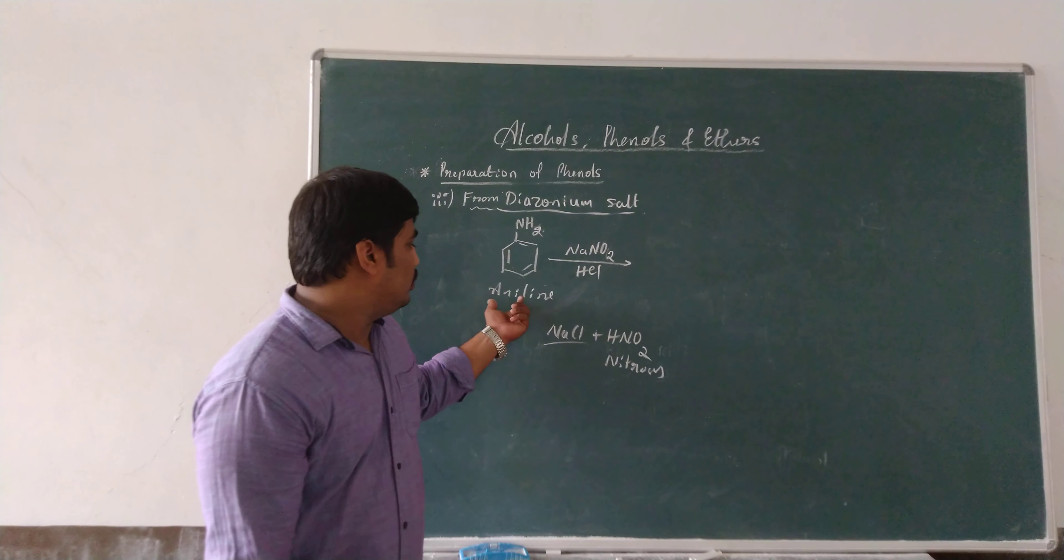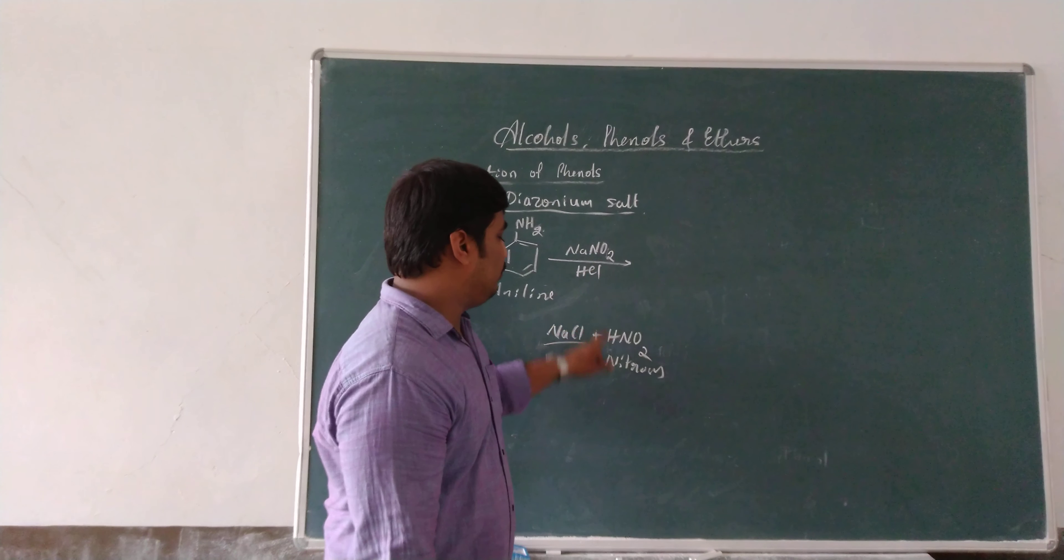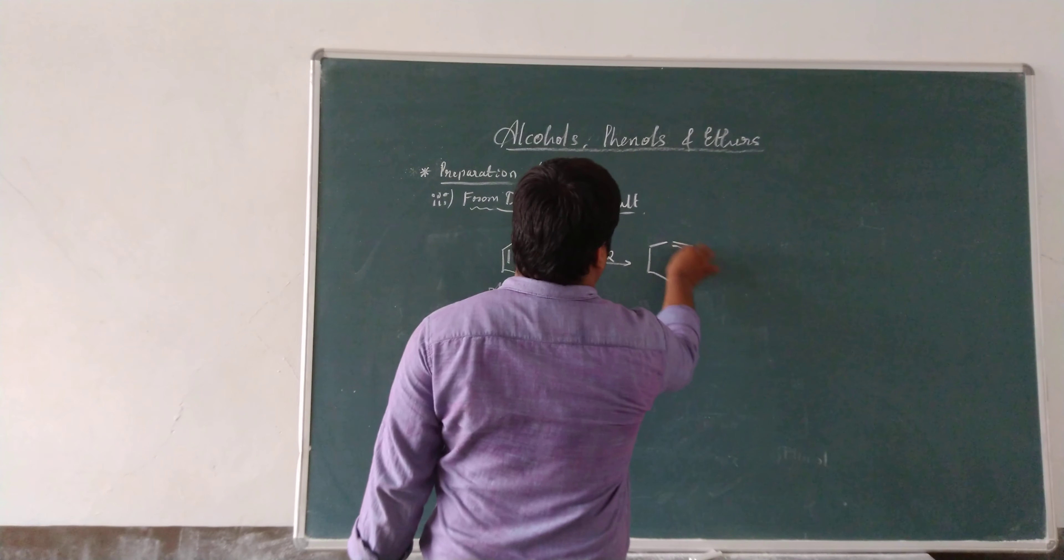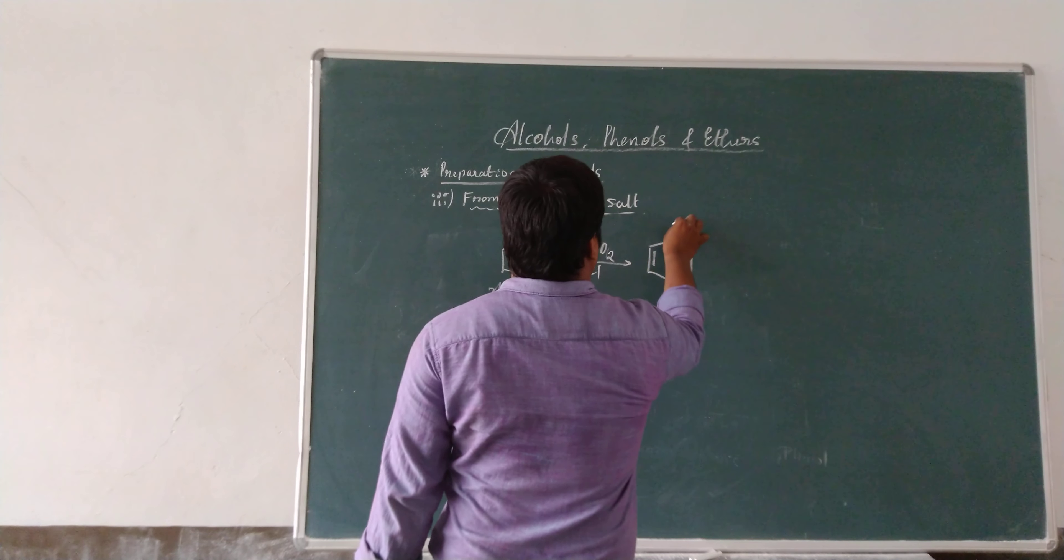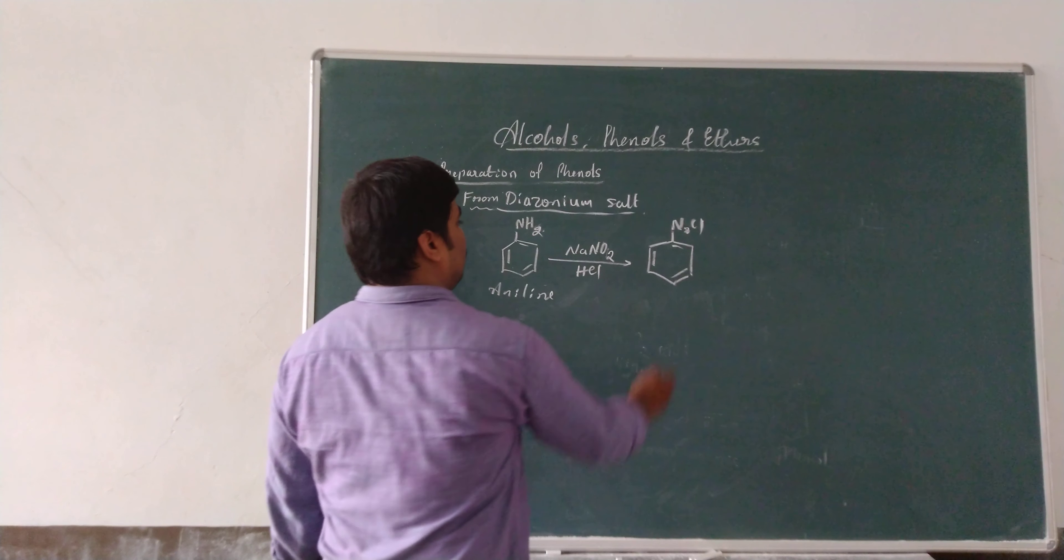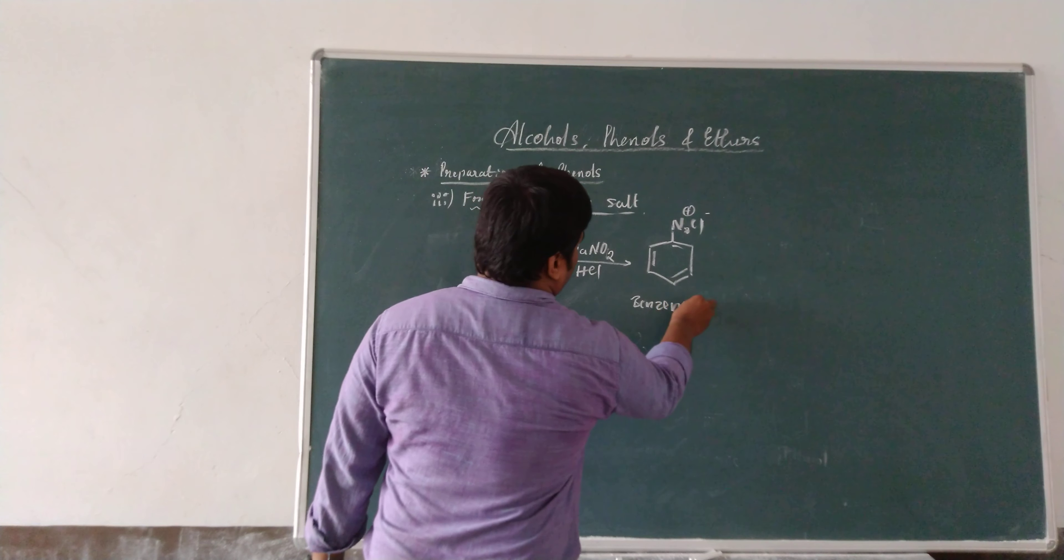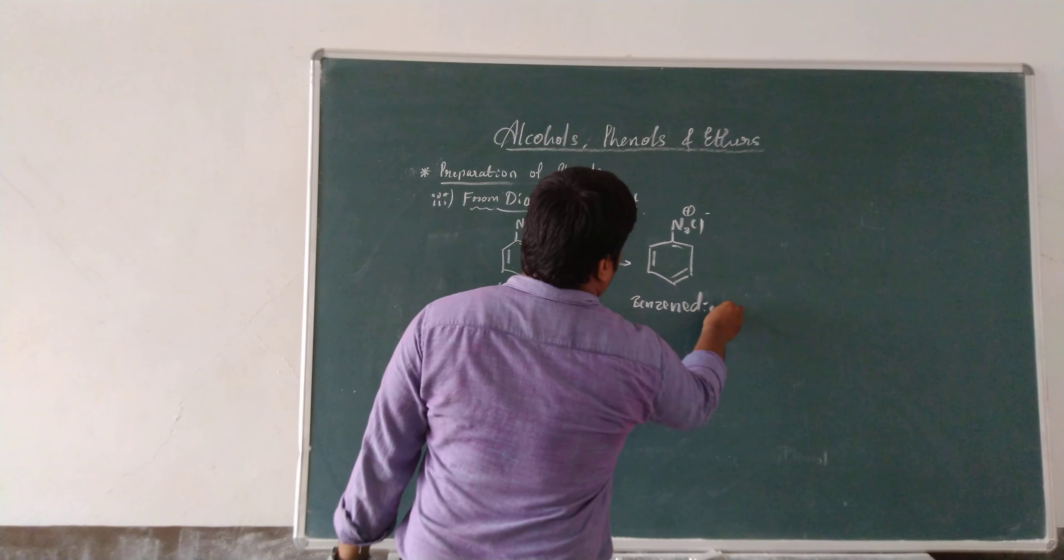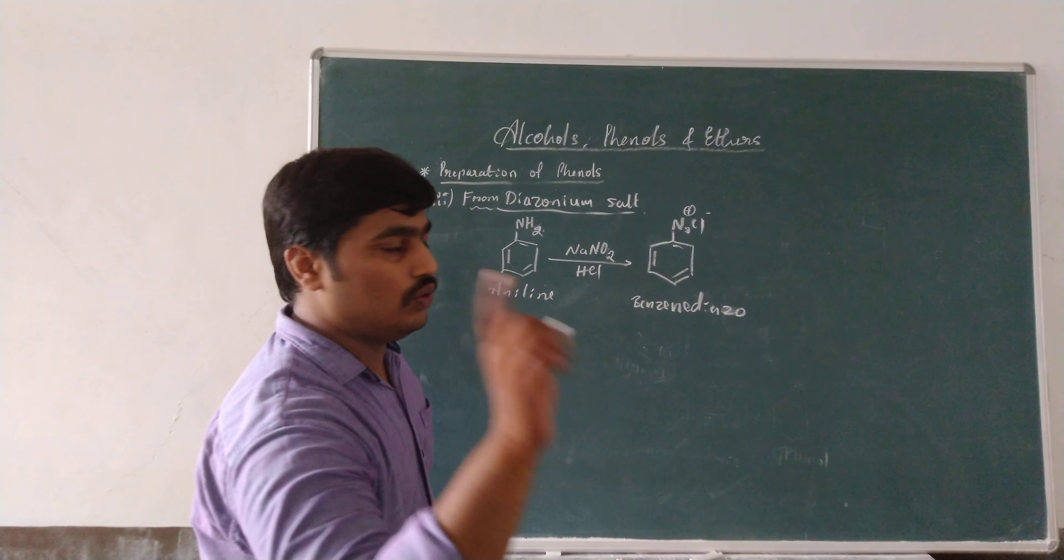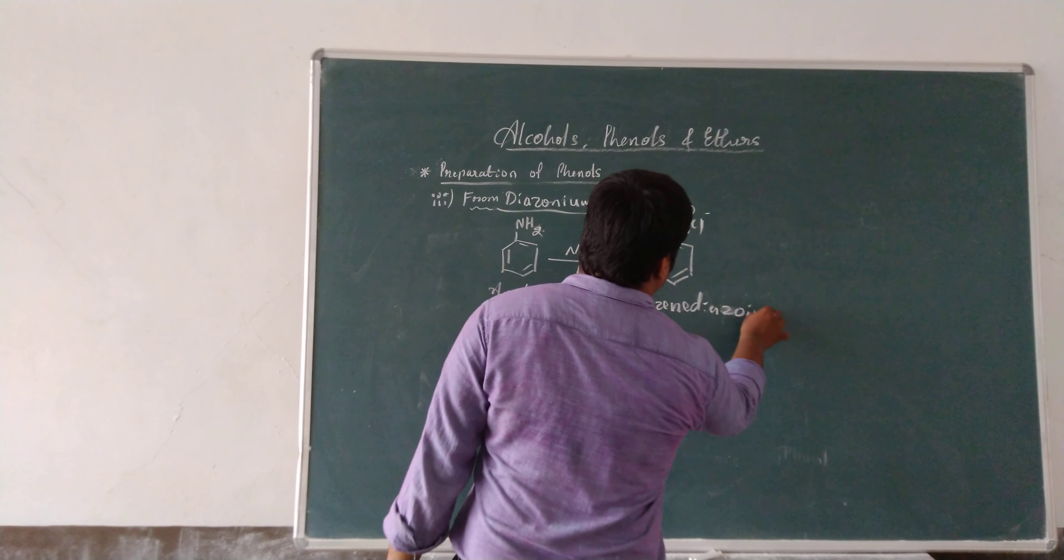In commonly, aniline is made to react with mineral acid. It produces already a good product of benzene diazonium salt. Benzene diazonium salt. This is intermediate, benzene diazonium salt.